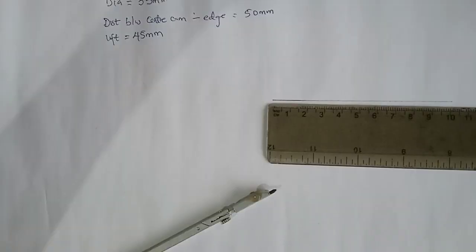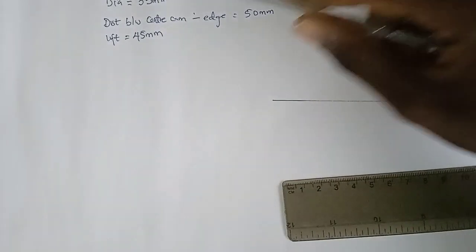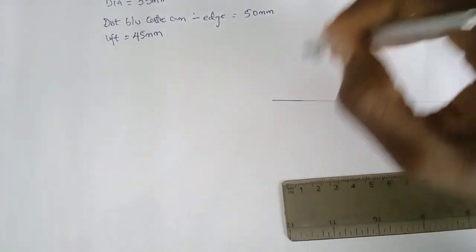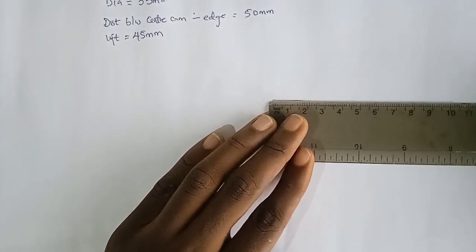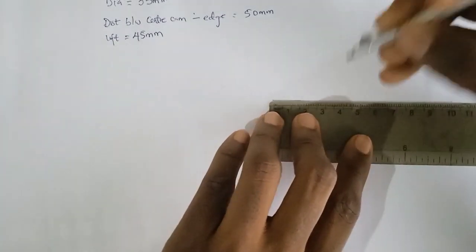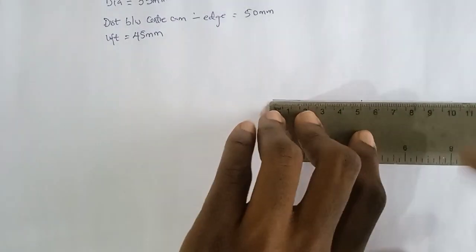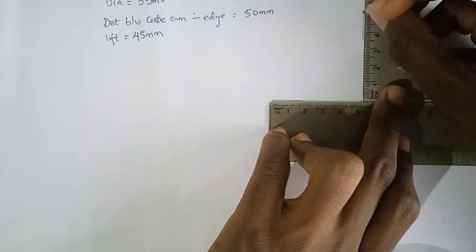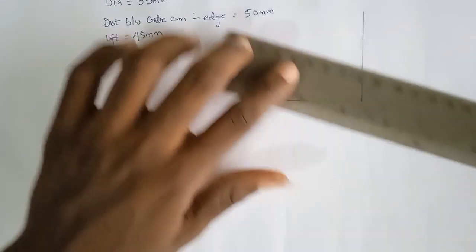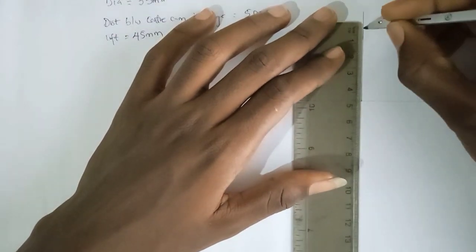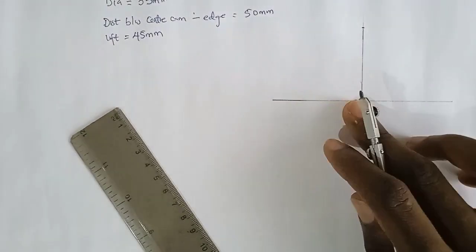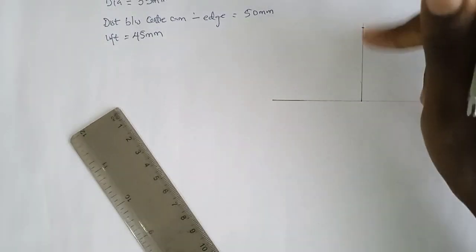So you draw a straight line. Now, the distance from the center of the cam to the edge is 50 mm — and since it's like a circle, from center to each side is 50, making the total length 100 mm. So we're going to measure a length of 100 mm for this displacement diagram, which is 10 cm. Now divide it into 2, which gives 5. We elongate a perpendicular line upward, and this line should be of the length of the lift, which is 45 mm. We're going to divide this base into 6 equal parts and also divide the lift of 45 mm into 6 equal parts.